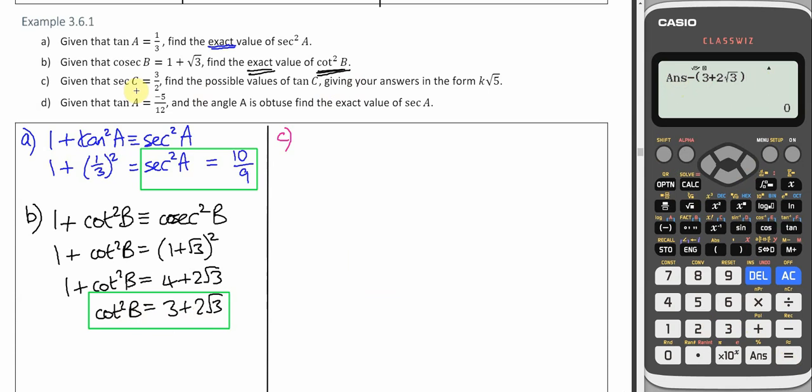Okay, in part C, we're finding the possible values, not the plural S values of tan C, given that sec of C is 3 over 2.